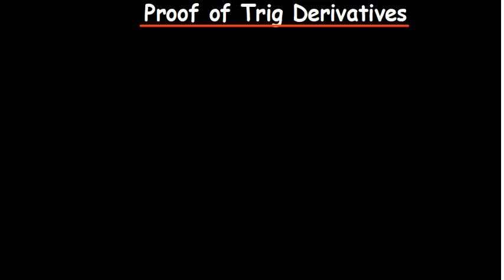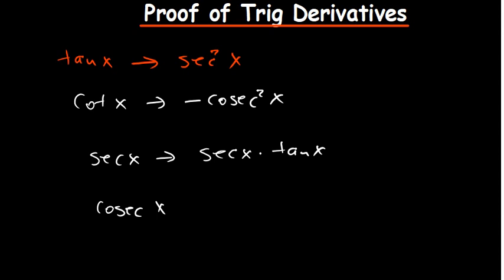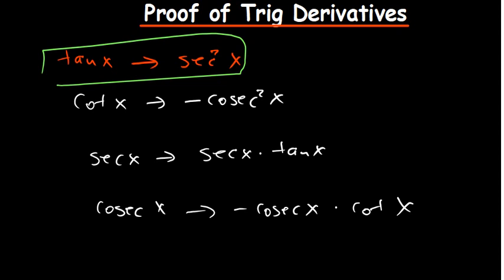I know most of you are actually way better than me in terms of being able to recall and remember most of these formulas. But I just want to talk about the proof, because some of you are able to remember the derivative of tan of x, the derivative of cot of x, the derivative of sec of x, and the derivative of cosec of x — which even right now I can't remember. But of course it's equal to negative cosec of x multiplied by cot of x. I can't remember all these. The only one I can remember properly is this part. So we are going to look at their proofs.